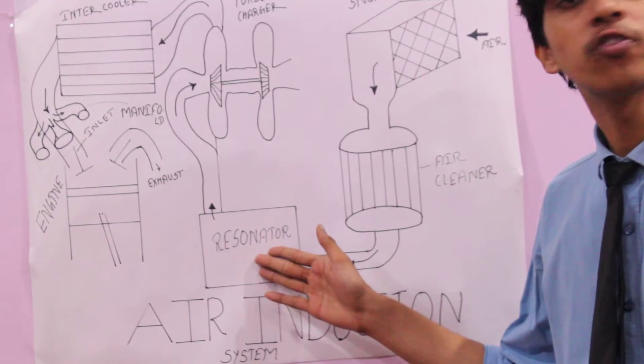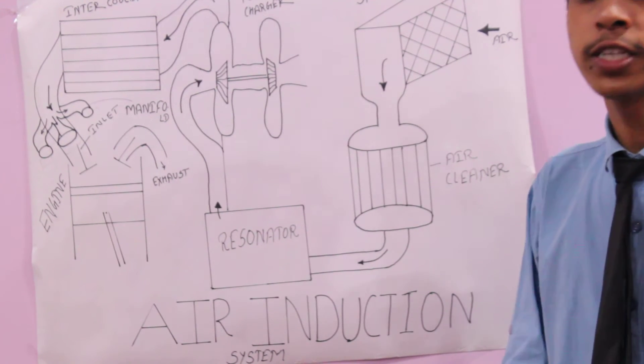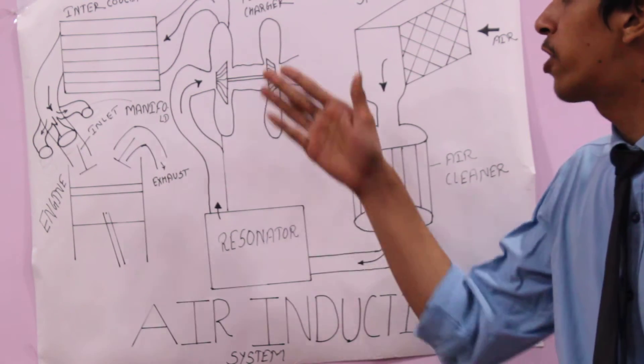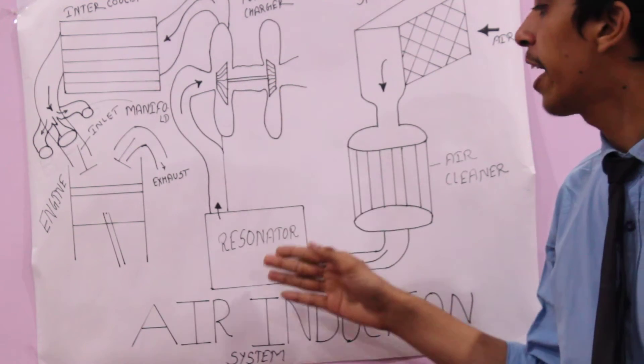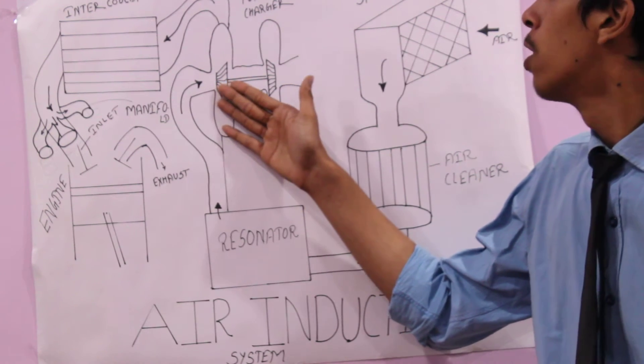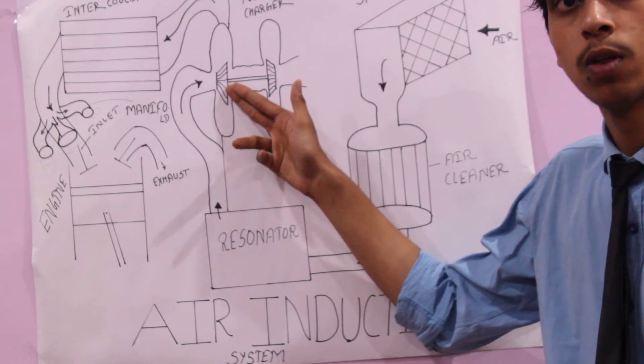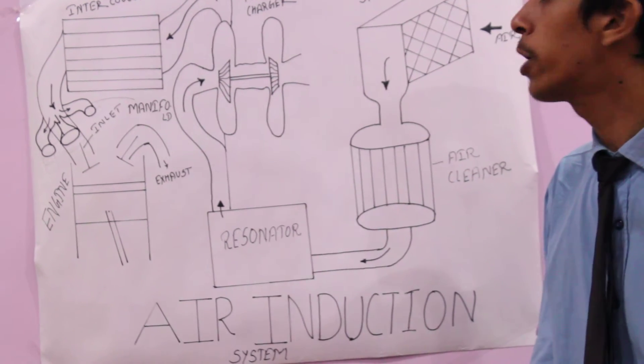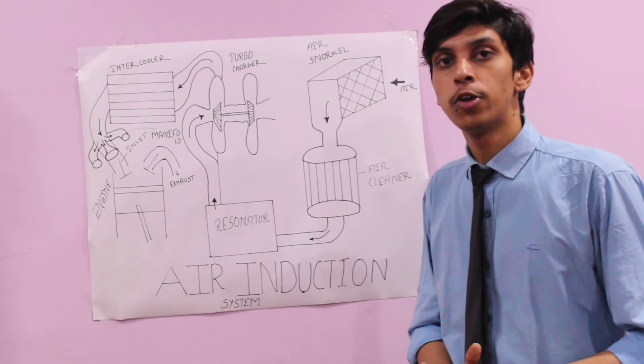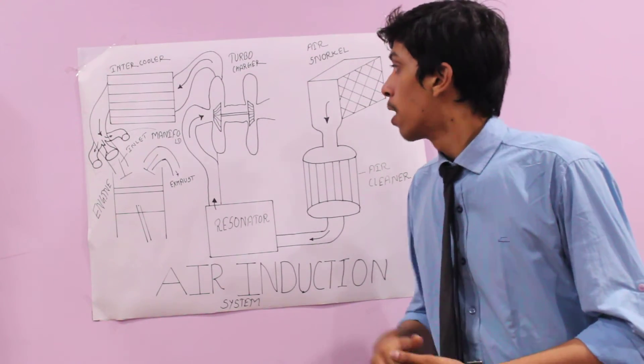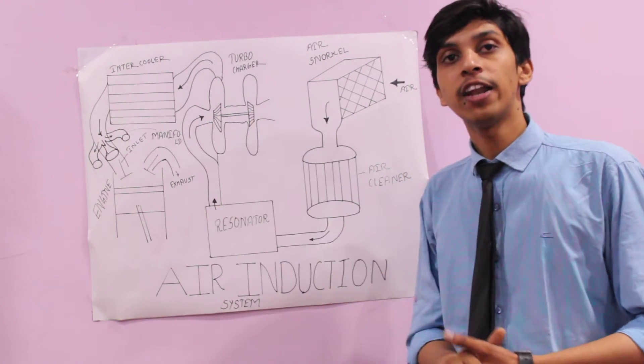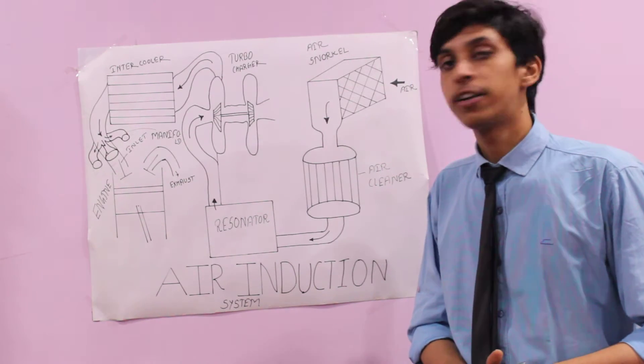That's why we need the resonator. The resonator reduces that noise. After this resonator, the turbocharger sucks the air from the resonator with the help of the centrifugal compressor. If you want to learn about the turbocharger, I have another video on turbocharger you can watch. With the help of the centrifugal compressor, it sucks the air and increases the pressure and also increases the temperature of the air.